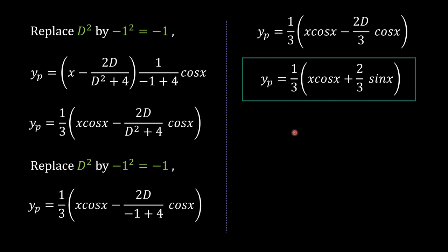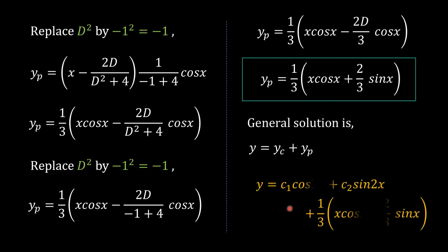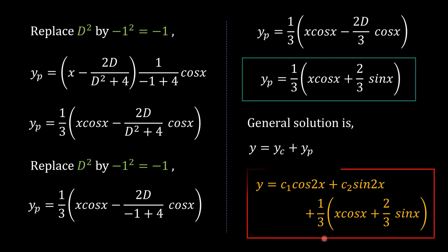The general solution is y = yc + yp. Substituting the expressions: y = c₁cos(2x) + c₂sin(2x) + (1/3)x·cos(x) + (2/3)sin(x). This is the required general solution. I hope you understood this method.